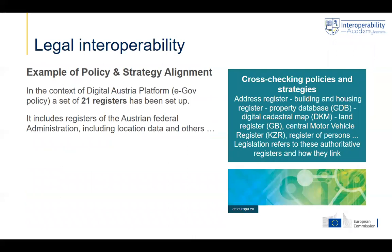One example is about legal interoperability, where in Austria they have worked on the alignment of 21 registers. Some of these do not contain location data — for example, the register of persons — but others are connected to registers containing location data, like the building and housing register, the property database, the cadastral map, the land register, et cetera. Another example of a non-location-based register is the central motor vehicle register.